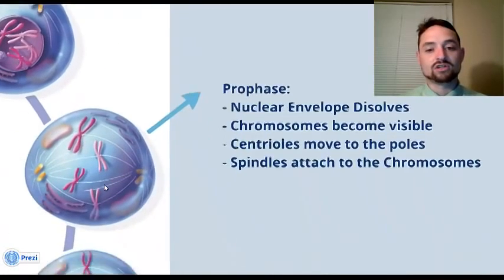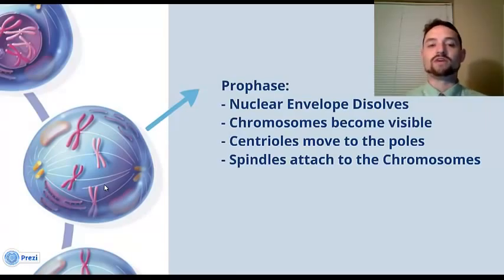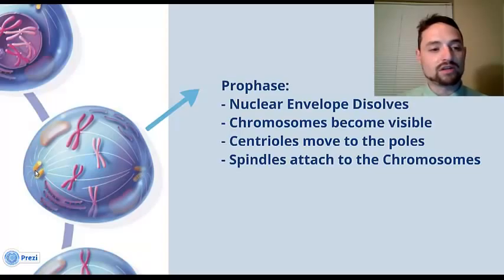So now you go into prophase. And in prophase, of course, you can see the nucleus has disappeared. We say that the nuclear envelope dissolves. The chromosomes become visible. You can see them. I like to think of it as you can see all your X's, because sometimes that helps people remember that.